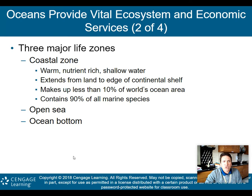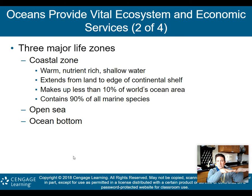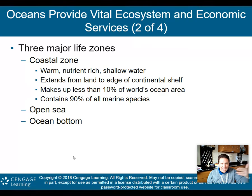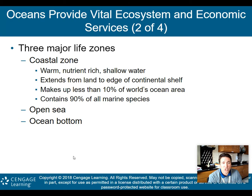There are three major life zones in the ocean. First, the coastal zone — warm, nutrient-rich, shallow water that extends from the land to the edge of the continental shelf. The continental shelf is basically where the continental plate and ocean floor meet, a steep drop-off a couple hundred miles off the coast. The coastal zone makes up less than 10% of the world's ocean area, yet 90% of all marine species live there.